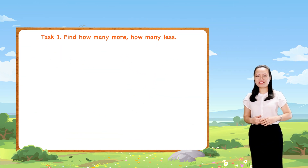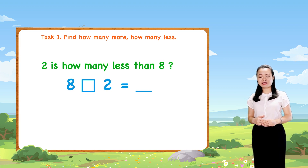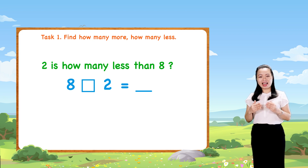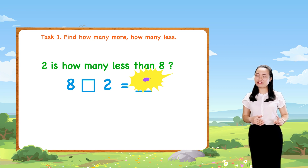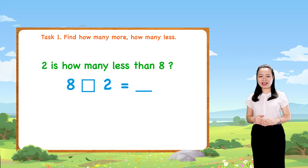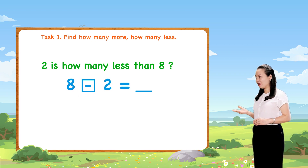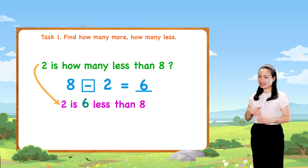Let's carry on. 2 is how many less than 8? To find how many less, we also find the difference between the two numbers. Here we have 8 minus 2 equals 6. So 2 is 6 less than 8.